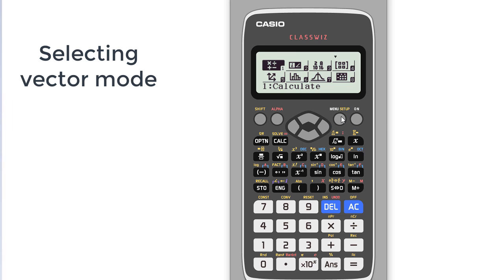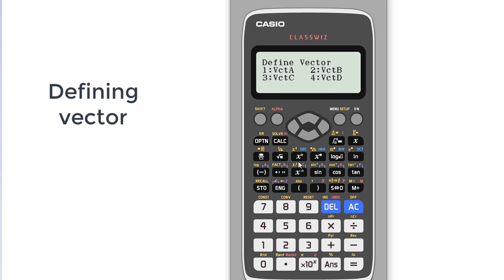First we have to go to the menu button. There will be a bunch of options here, and vectors is on number five, so we'll select five. We have to define a vector. I will select one for vector A. Dimensions—normally vectors are 3D—so I will select three. Now we have to enter the values. Let's put some random values: 2, 3, 5.